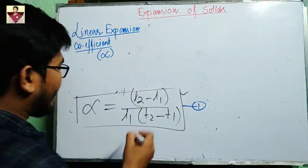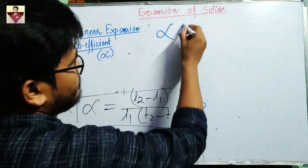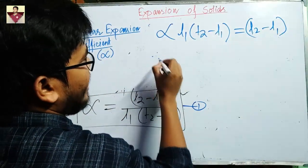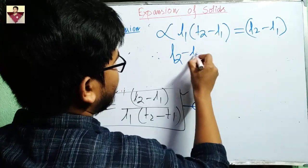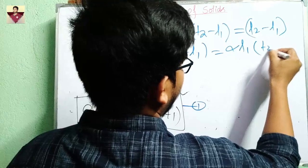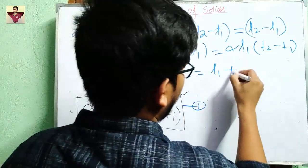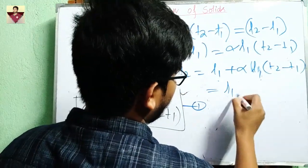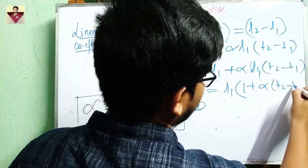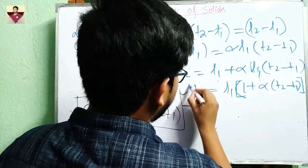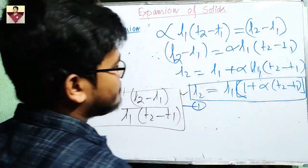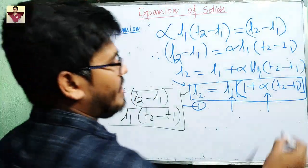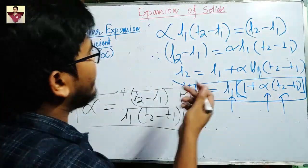Rewriting the equation: alpha times L1 times (T2 minus T1) equals L2 minus L1. Therefore, L2 equals L1 times (1 plus alpha times (T2 minus T1)). This is the key equation to remember for calculating the change in length of a substance. If you know L1 at temperature T1, know alpha for that material, and know the final temperature, you can easily calculate the final length L2.